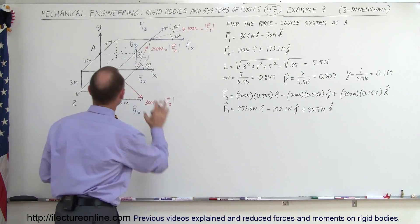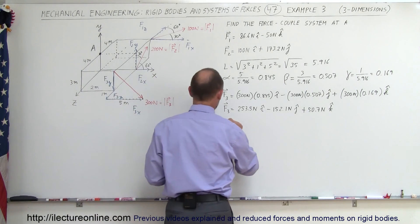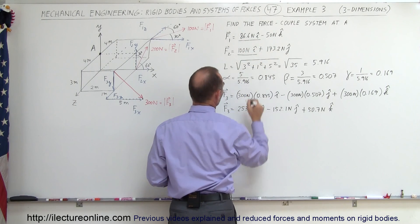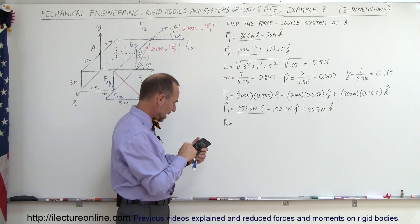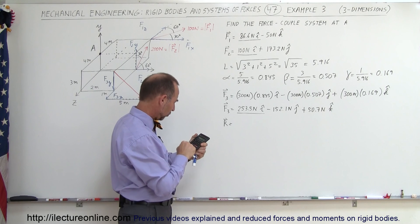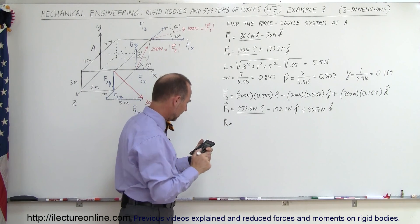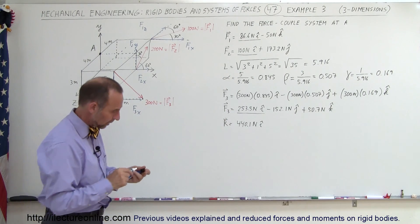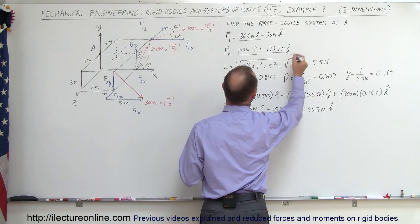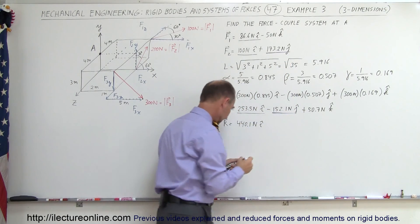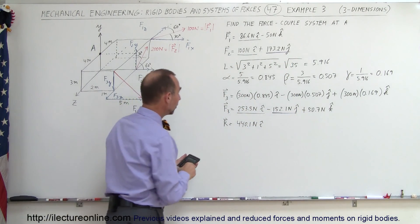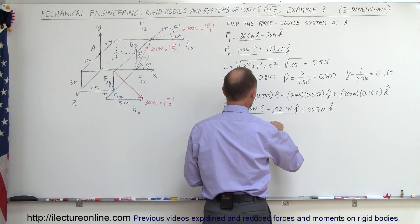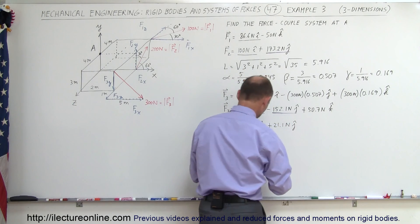We now have all the components of the three vectors, which allows us to get the resultant vector. The resultant vector equals the sum of the x components, y components, and z components. For x: 86.6 plus 100 plus 253.5 gives us 440.1 newtons in the x direction. For y: 173.2 minus 152.1 gives us positive 21.1 newtons in the y direction.